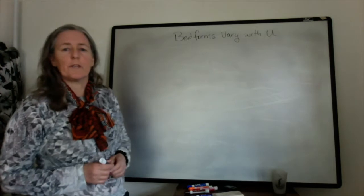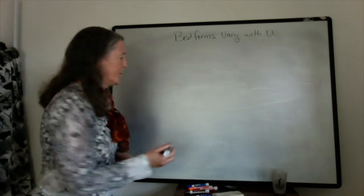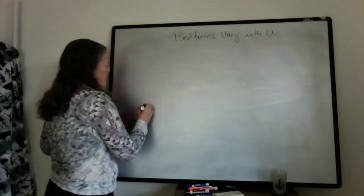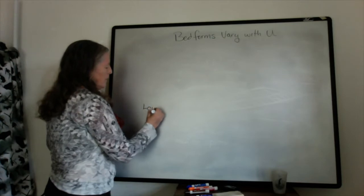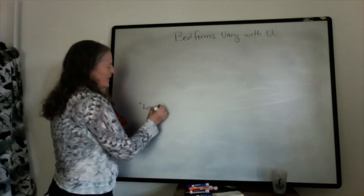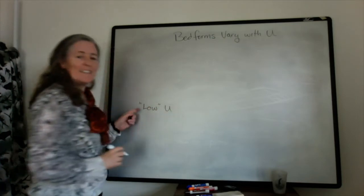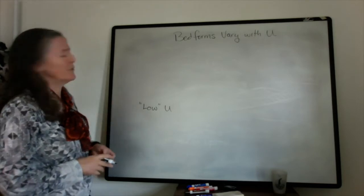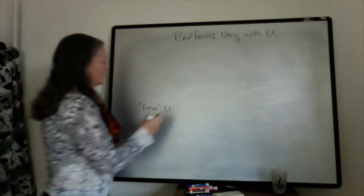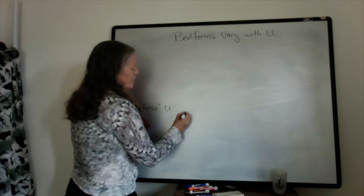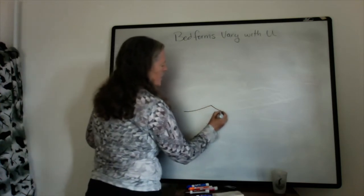Okay, so the bed forms that we get vary with the flow speed. At a low, relatively low flow speed, fast enough to transport sand, for example, we tend to get ripples, which I've been talking about here.